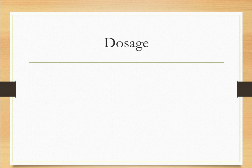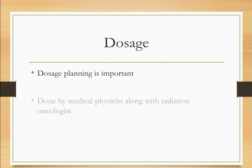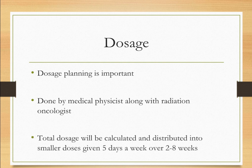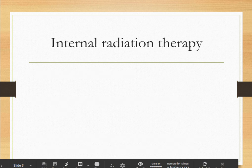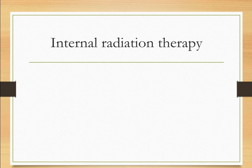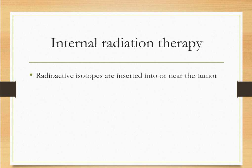Deciding the dosage in external beam radiation is a crucial point, since side effects are many. The total dosage is split into several small doses given to the patient to avoid a single high-dose exposure, which can be toxic. The second type of radiation therapy is internal radiation therapy, where radioactive isotopes — both liquid and solid — are inserted into the patient's body either intravenously or orally.